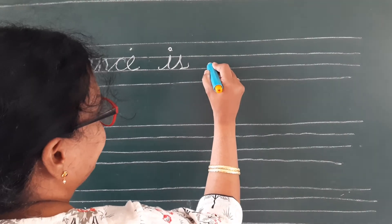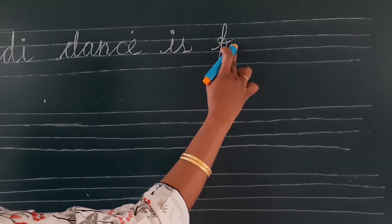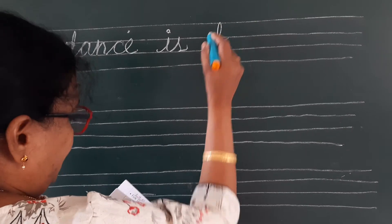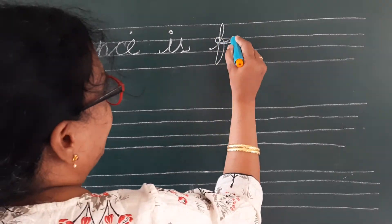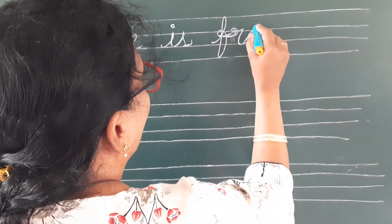I-S, is from. How to write small F? Touch the four lines and give a loop here in the second line. Near the second line, you should give a small loop. F-R-O-M. From. How to write? From F to R like this: F-R-O-M.